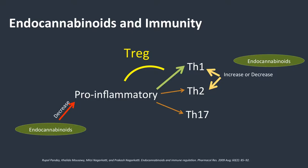How does it shift cytokine profiles? If this is our immune response — where we start with a pro-inflammatory response and go to TH1, TH2, or TH17 — endocannabinoids can either drive TH1 or TH2, or they can also increase the T-regulatory response, which can shut down TH1 or TH2. And endocannabinoids can decrease pro-inflammatory cytokines, which is why they work so well for pain — decreasing IL-1, IL-6, and TNF-alpha.